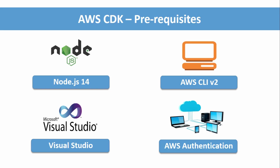We will install prerequisites like Node.js, Visual Studio, and AWS CLI for the command line utilities. Then we will see how to authenticate AWS from the CDK projects — basically how to integrate and configure IAM user access credentials.